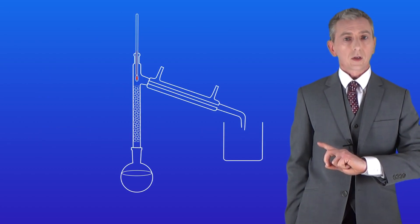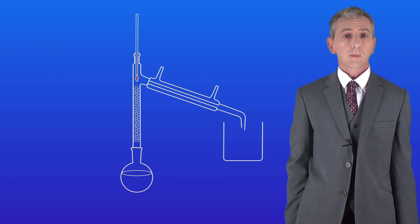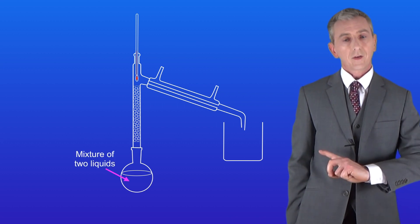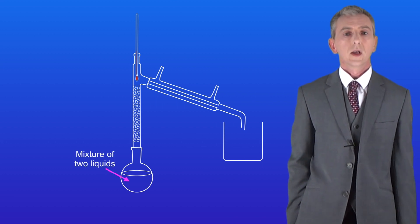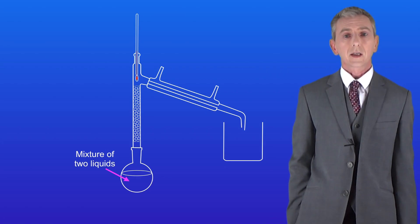Here's the apparatus that we use. You'll notice that this is very similar to the apparatus for simple distillation but there is one key difference. We have here in our flask a mixture of two different liquids, but this technique would work just as well with a mixture containing lots of different liquids, as long as these liquids have different boiling points.